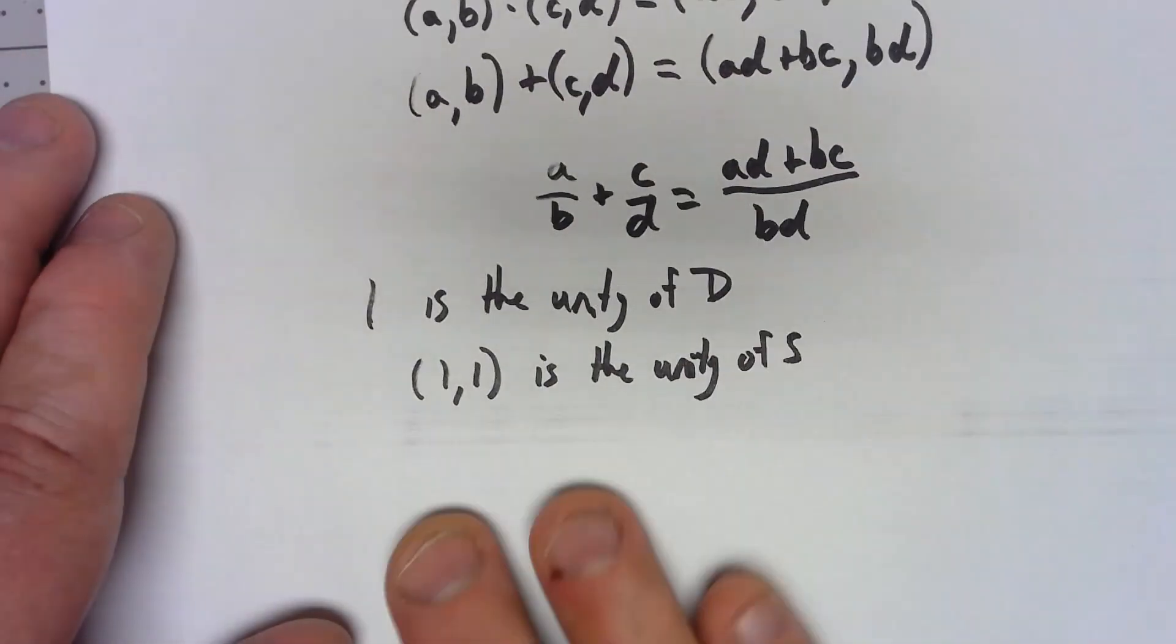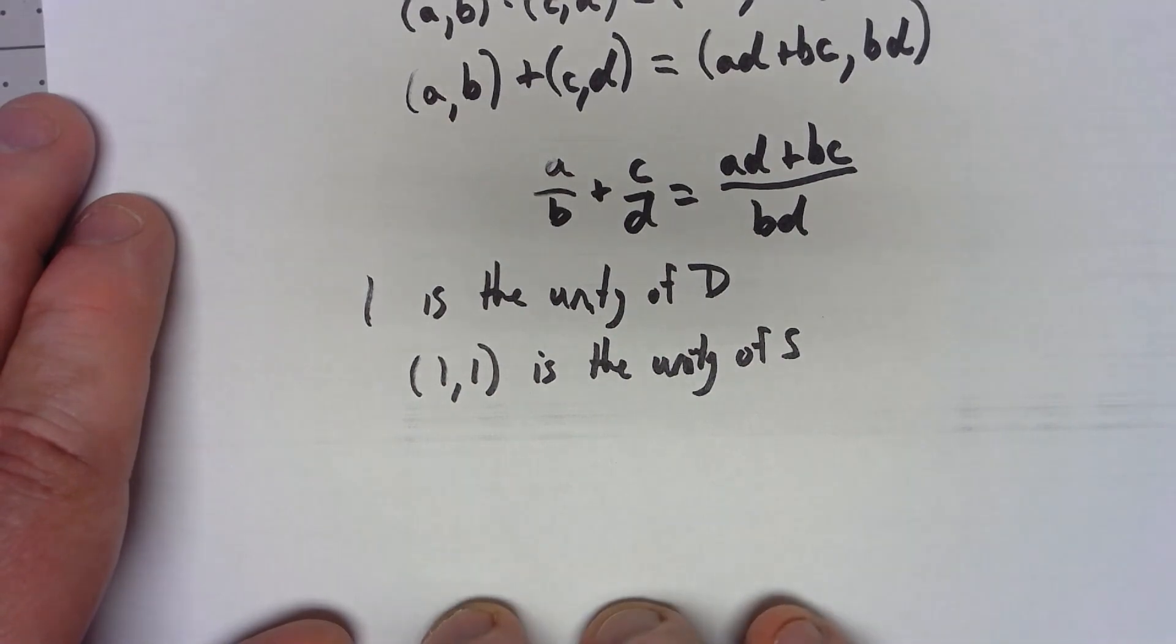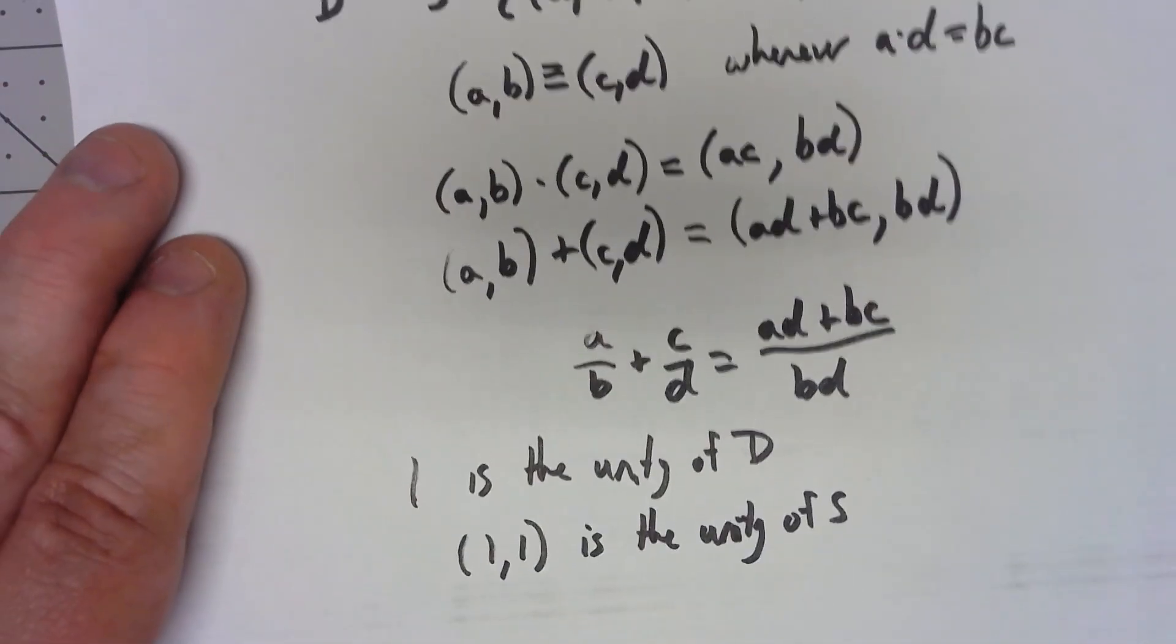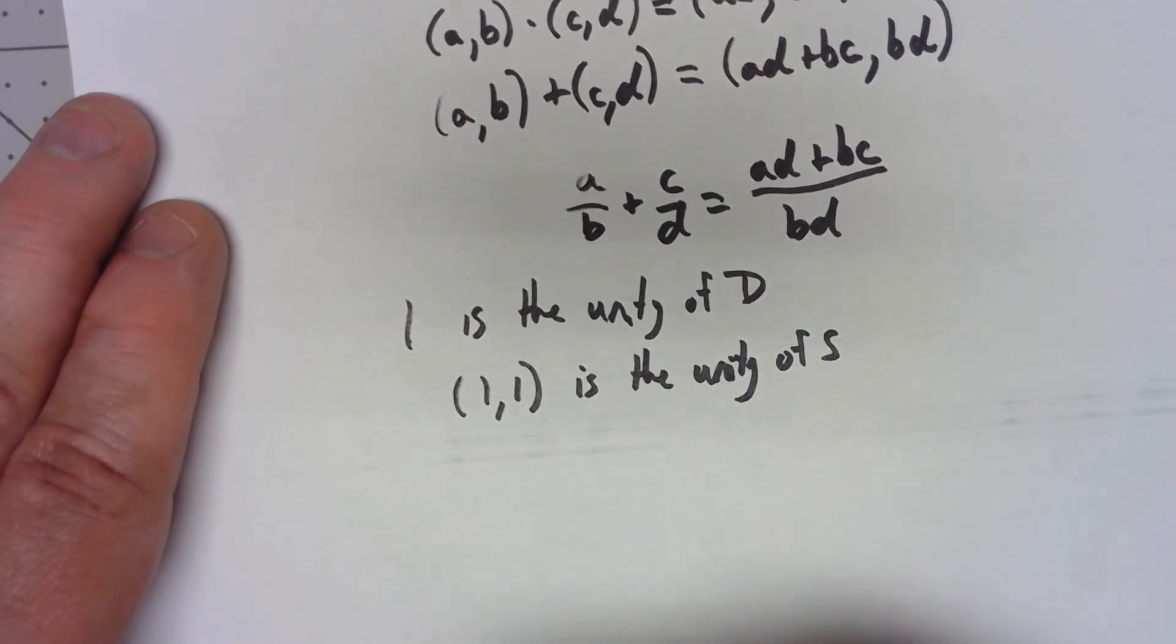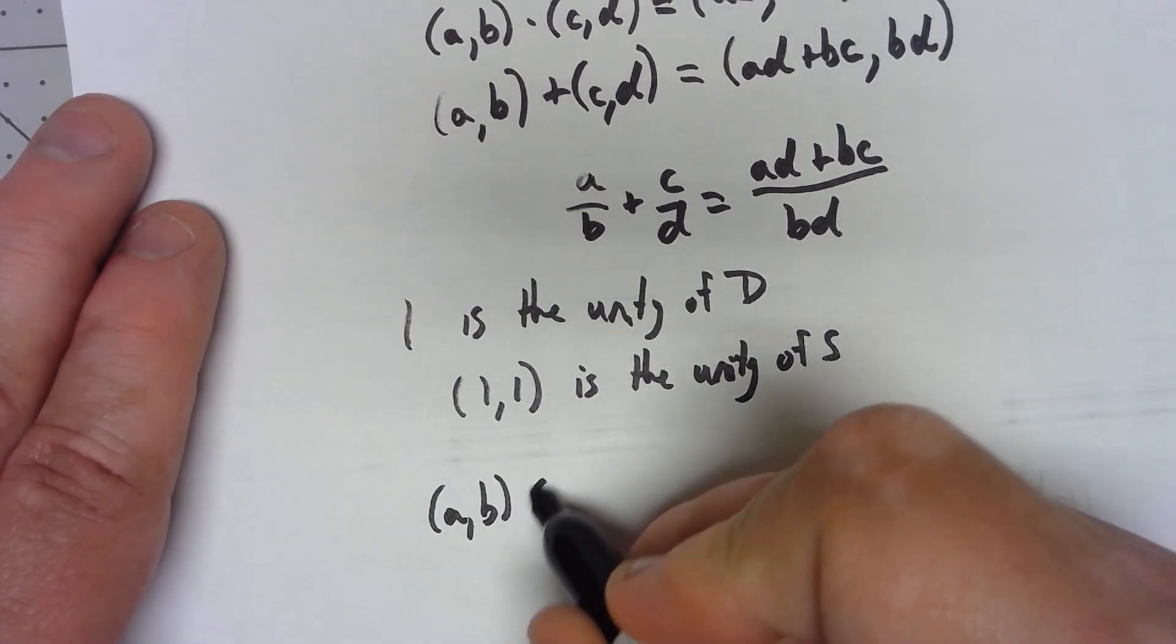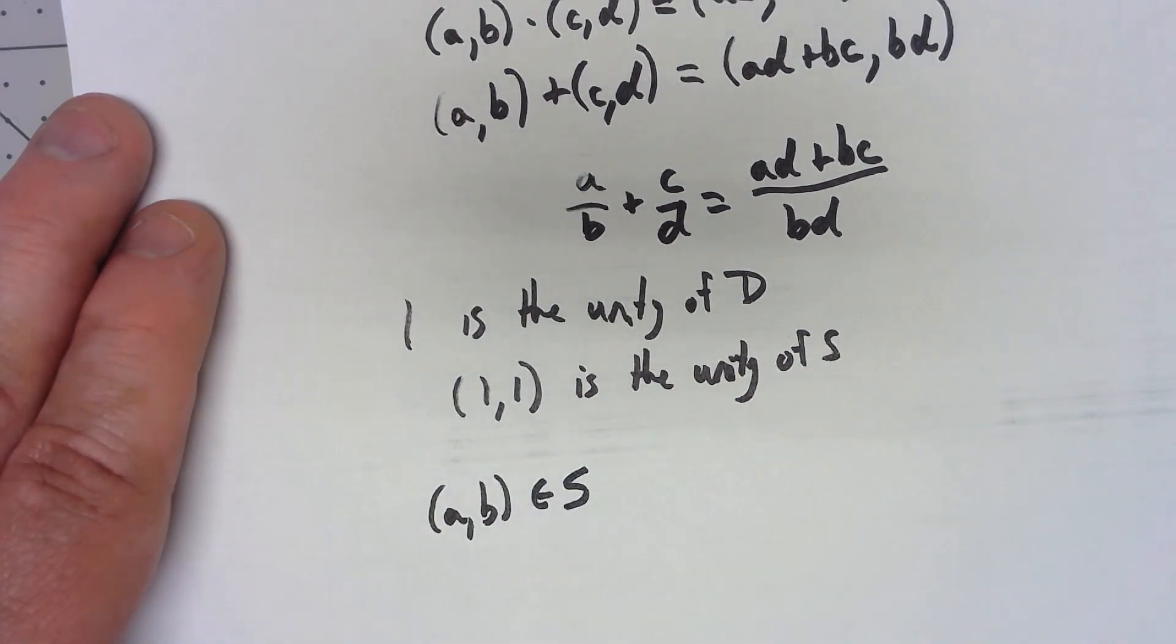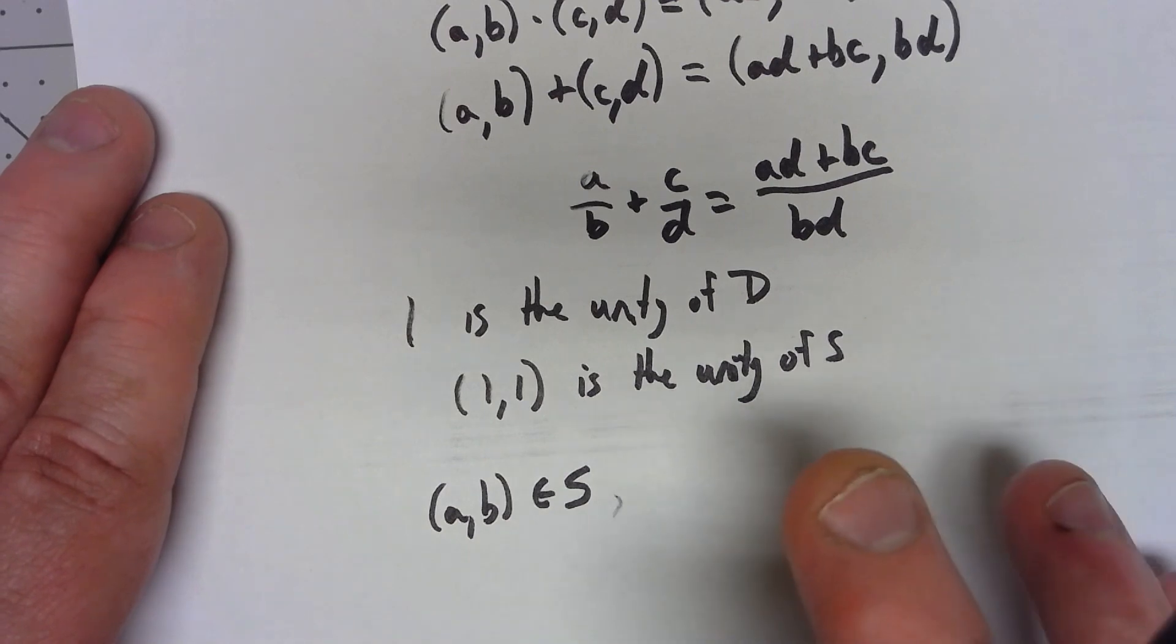The other thing we need for a field is that we need to be sure that we have multiplicative inverses. Well, suppose we have (a, b) is in our supposed field. Well, if a is equal to 0, this is the equivalence class of 0 in S and that doesn't need to have an inverse.